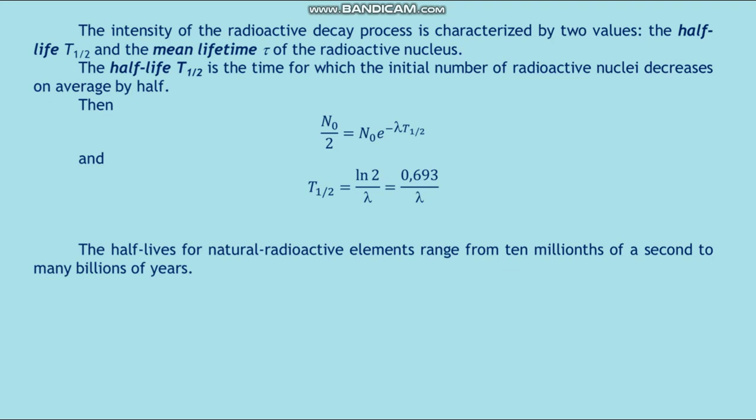The intensity of the radioactive decay process is characterized by two values: the half-life T and the mean lifetime τ of the radioactive nucleus. The half-life T is the time for which the initial number of radioactive nuclei decreases on average by half. Then N₀/2 = N₀ × e^(-λT), and T = ln(2)/λ = 0.693/λ.